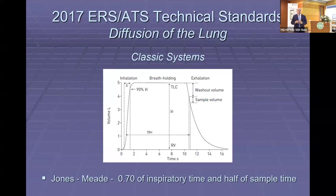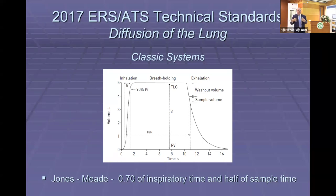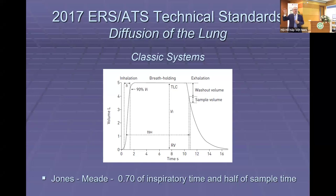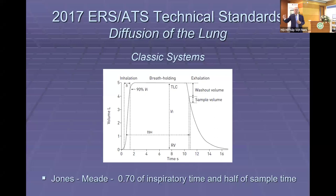The breath-hold time includes about 70% of inspiration, the full hold period, and a little bit of exhalation because you still have gas in the lungs. So if I set my system to hold for 10 seconds, it will calculate a breath-hold time larger than that. Oftentimes, people set their lockout time at maybe 9 seconds — accounting for 70% of inspiration plus a little expiration — so that the calculated breath-hold falls within the 8–12 second window.